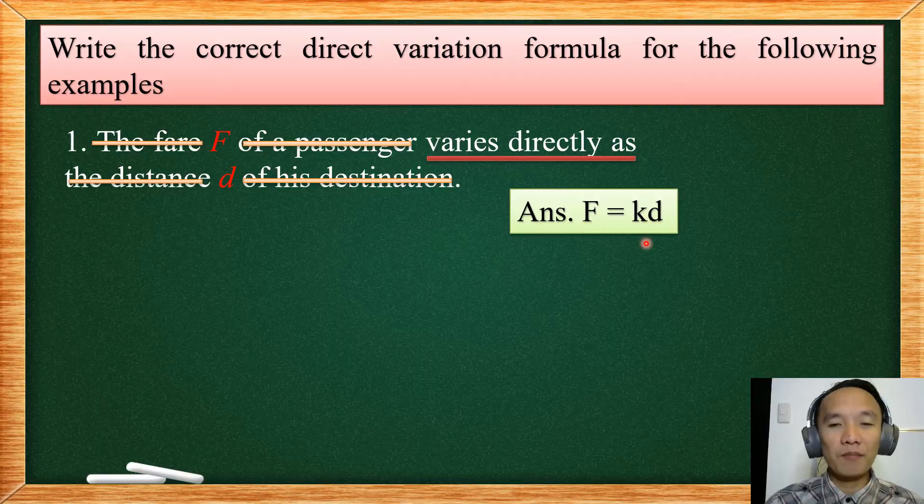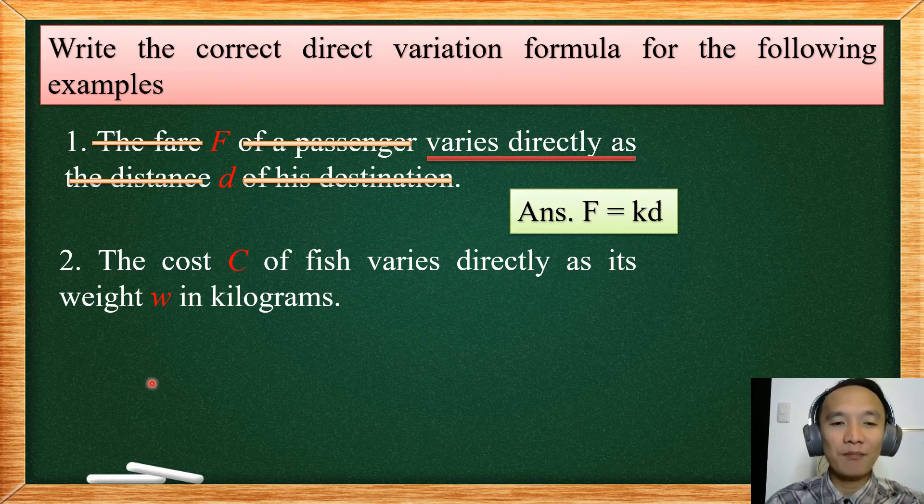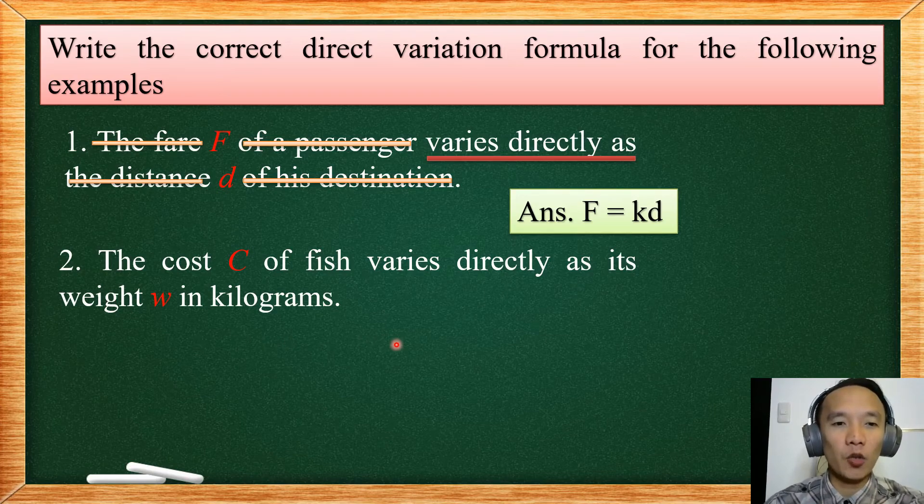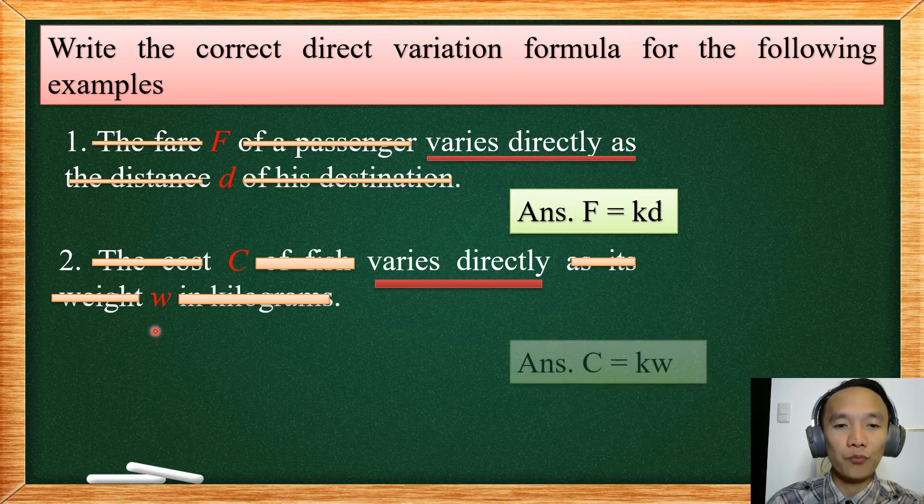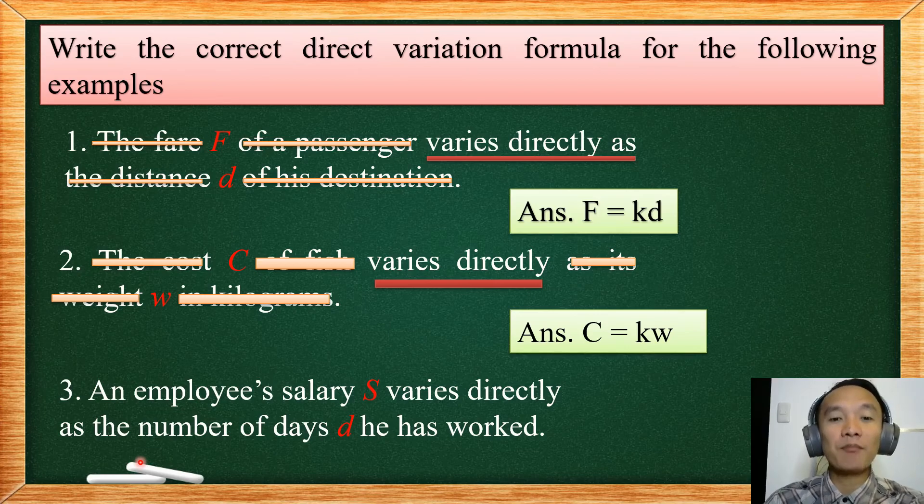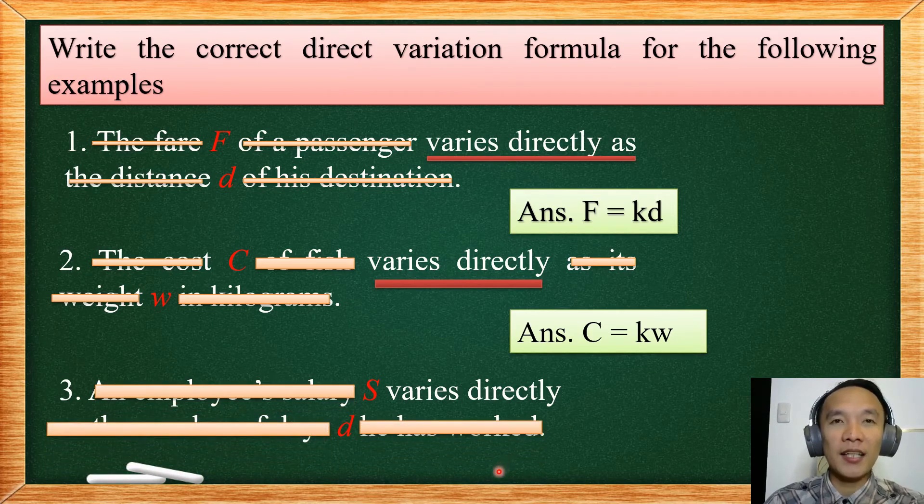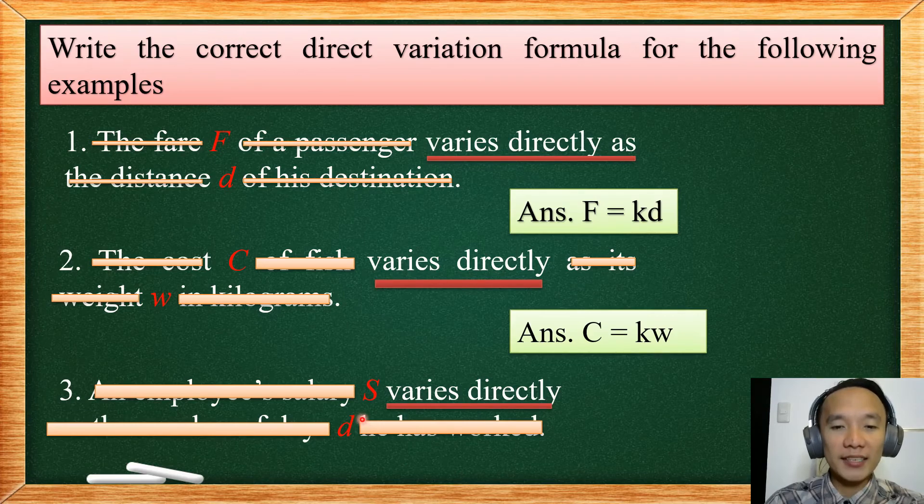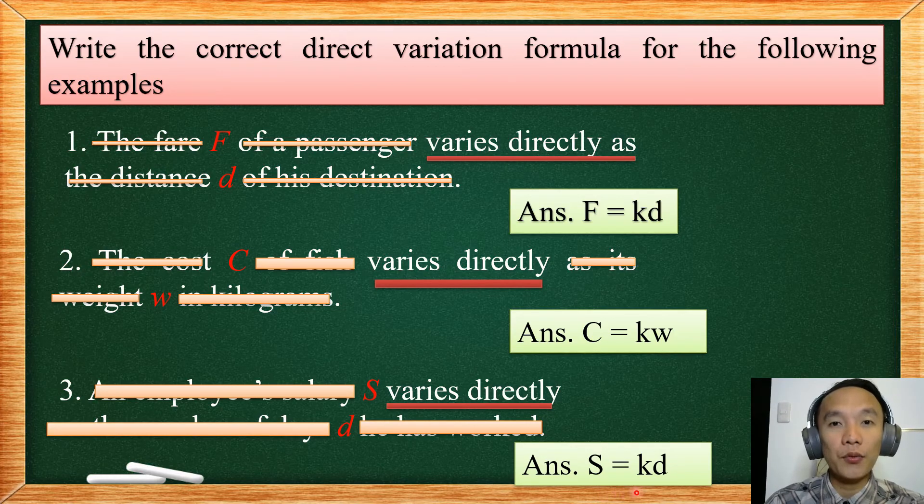So the cost C of fish varies directly as its weight W in kilograms. So again, eliminate the non-important words. Find the important words which is C varies directly to W. We are going to write the formula that is just C equals KW. And last example will be an employee's salary S varies directly as the number of days D he has work. So we will have S varies directly to D. In formula, that is S equals to KD.